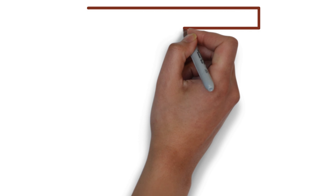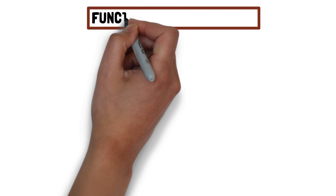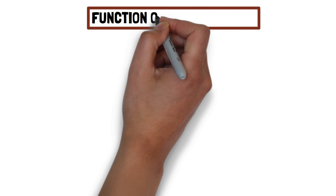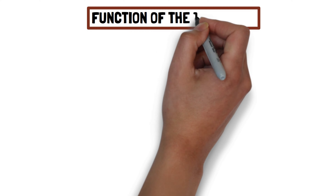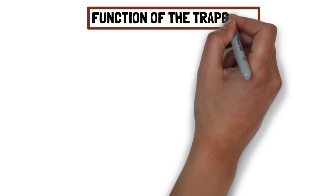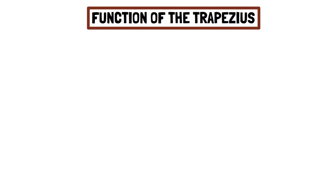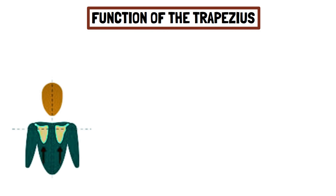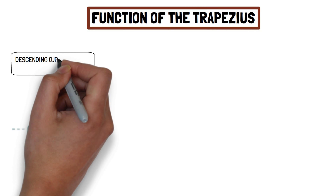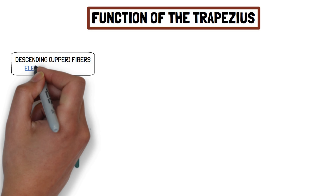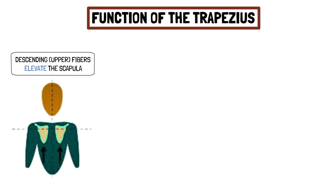The actions of the trapezius muscle are largely dependent on the direction of the fibers that are contracting. The descending fibers act with the levator scapulae muscle to produce an elevation of the scapula.